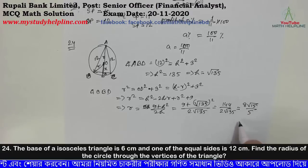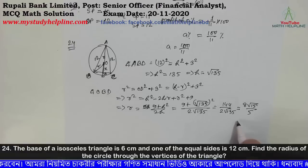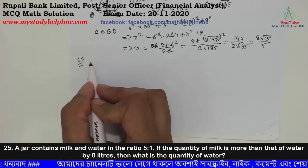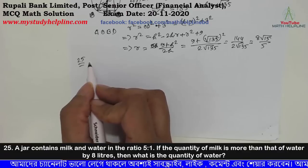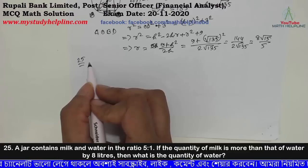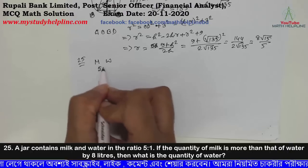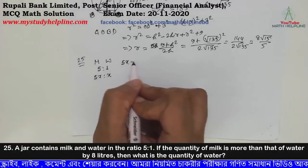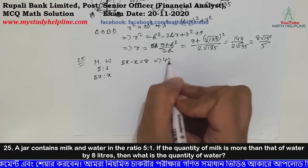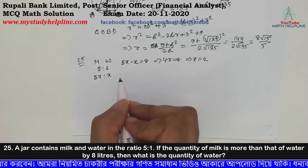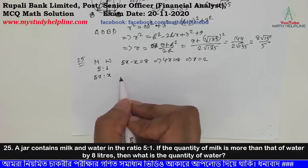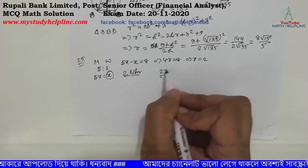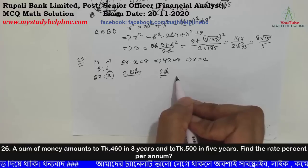So the answer is 8 root 15 over 5. Now there is a mixture problem: milk and water are in ratio 5 to 1. Some water is added. The remaining water content changes. The problem states that 2 liters of water is removed.